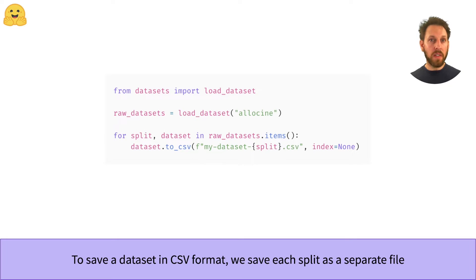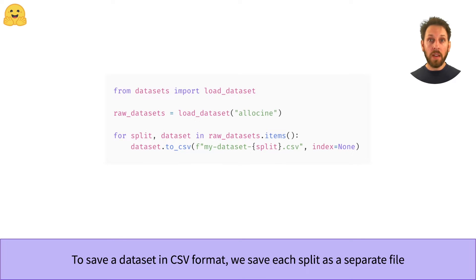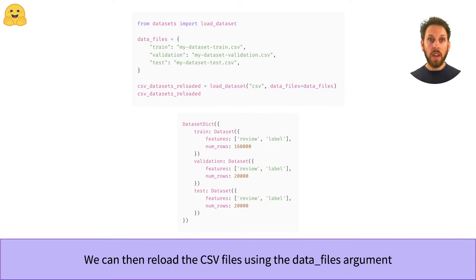If we want to save our datasets in the CSV format, we use the to_csv function. In this case you'll need to loop over the splits of the DatasetDict object and save each dataset as an individual CSV file. Since the to_csv function is based on the one from pandas, you can pass keyword arguments to configure the output. In this example we've set the index argument to None to prevent the dataset's index column from being included in the CSV files.